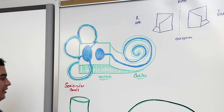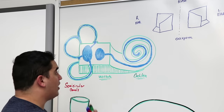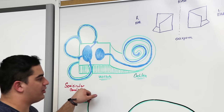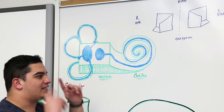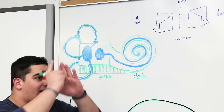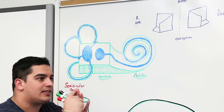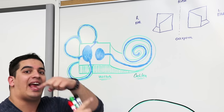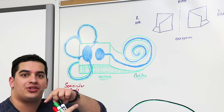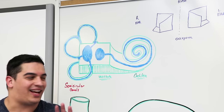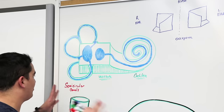There are actually three semicircular canals. What's really cool about them is that they're oriented in such a way that they fulfill the x-axis, the y-axis, and the z-axis — so any rotational acceleration, they can pick it up in any angle. That is just so cool.